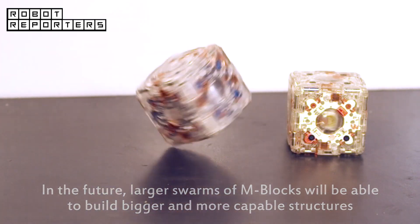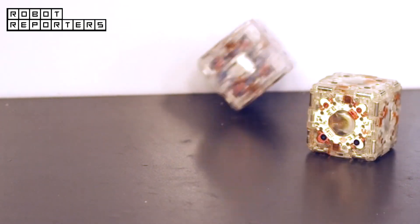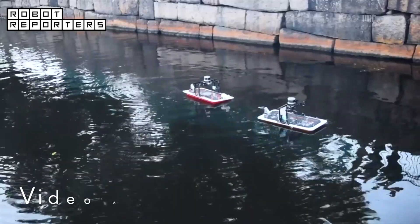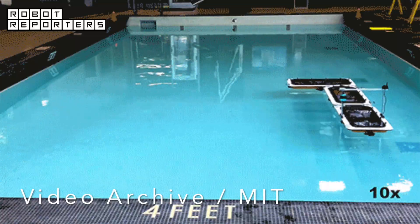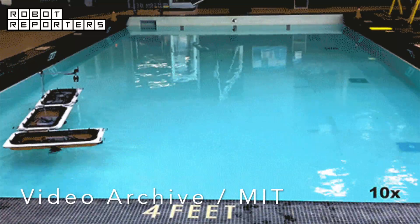MIT is a pioneer in swarming robots. The robots can autonomously connect into new configurations. For example, the boats that can form pop-up bridges, stages, and other structures.